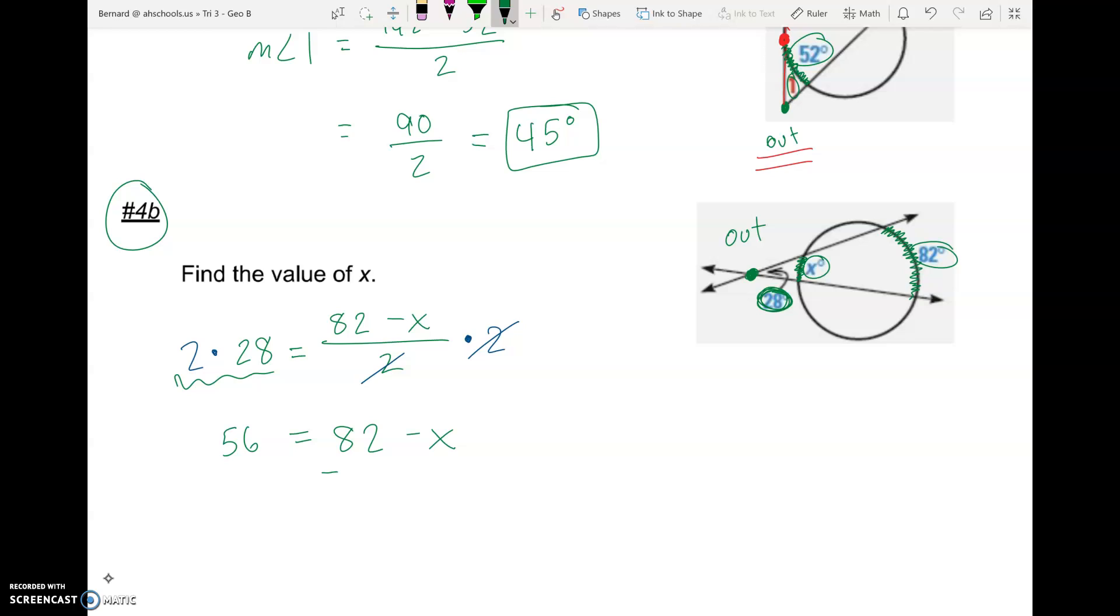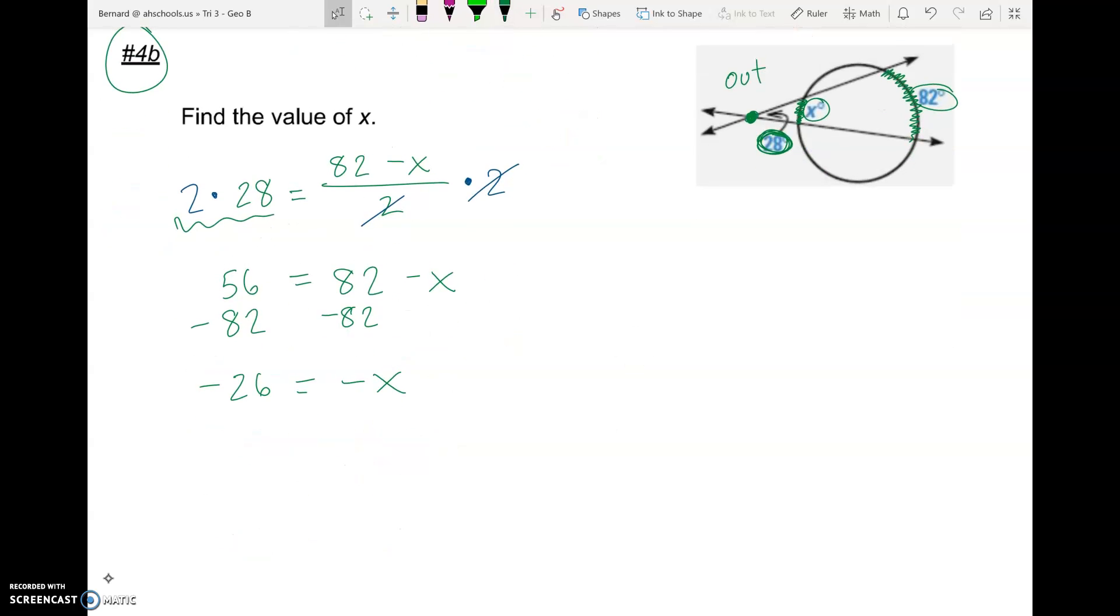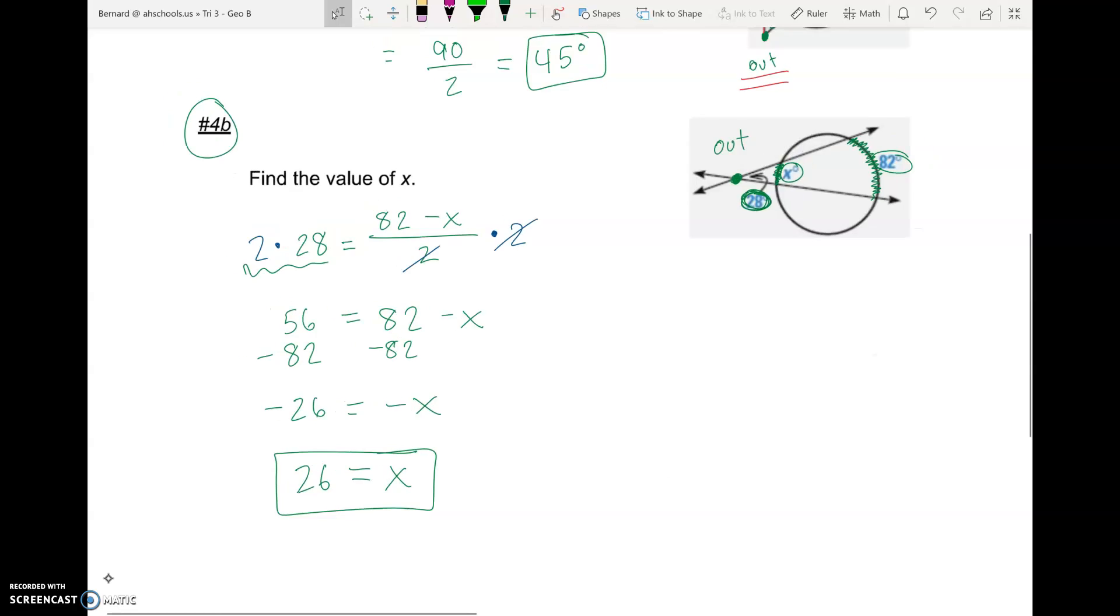We got to get x by itself. So we'll subtract 82 from both sides. And 56 minus 82 is negative 26. And that equals negative x right now. And then we can divide by negative 1, because that just flips our signs. Or we can just think of it as negative 26 equals negative x. So positive 26 equals positive x. And that is our answer.